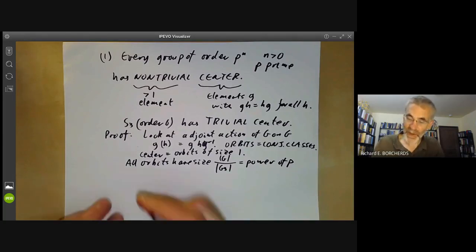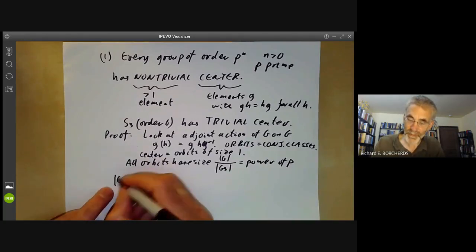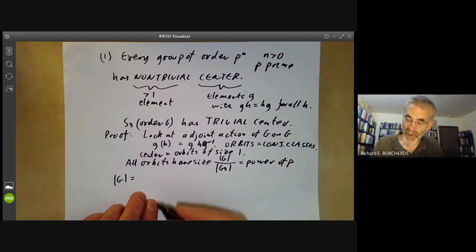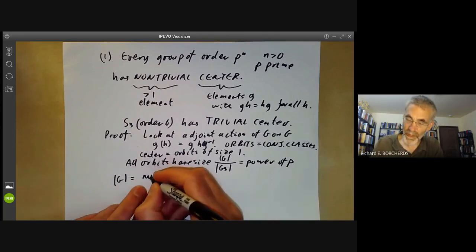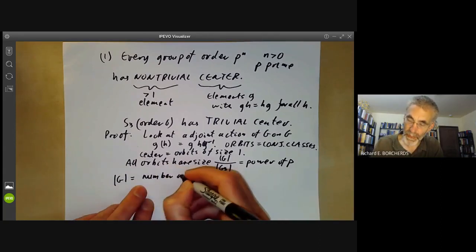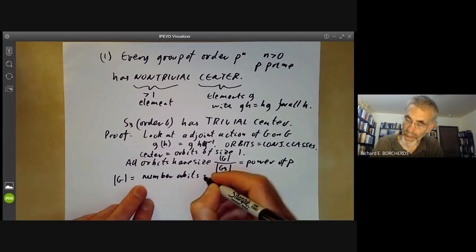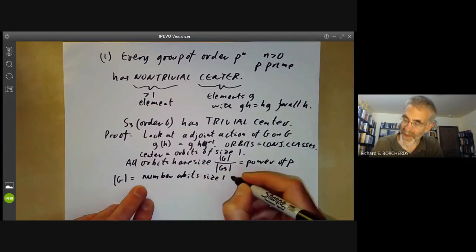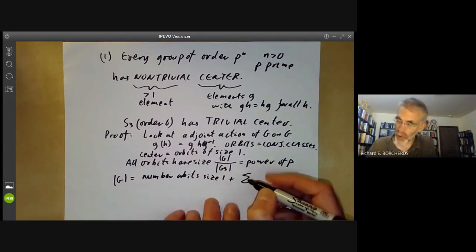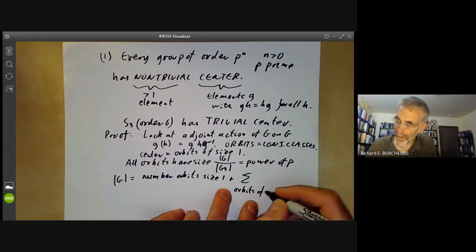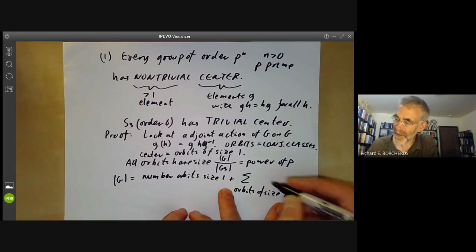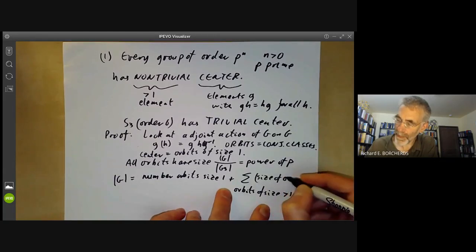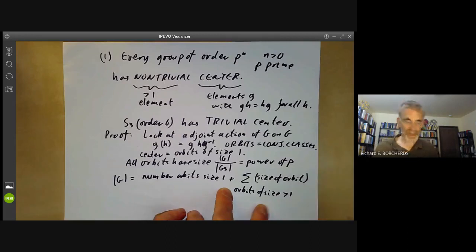So let's look at the order of G. This is equal to the number of orbits of size 1 plus the sum over all orbits of size greater than 1 times the size of the orbit.